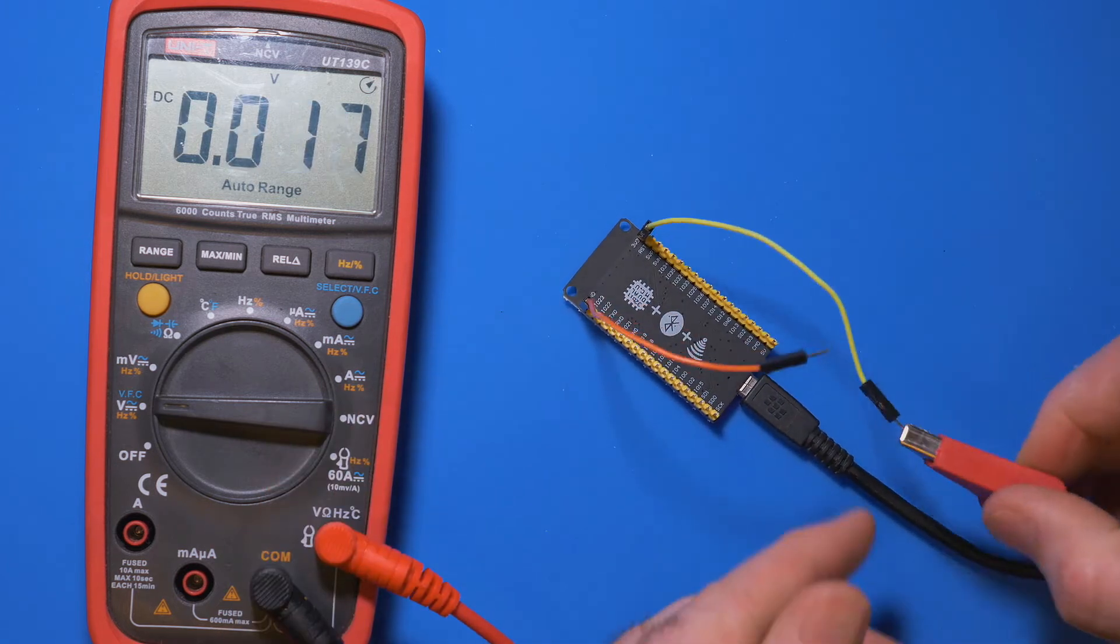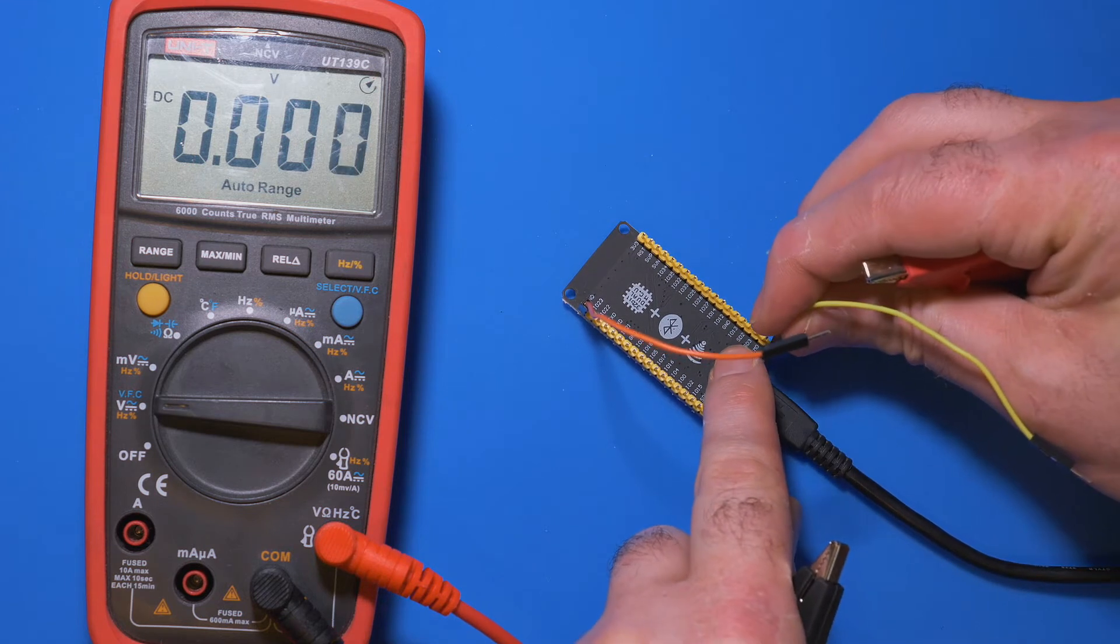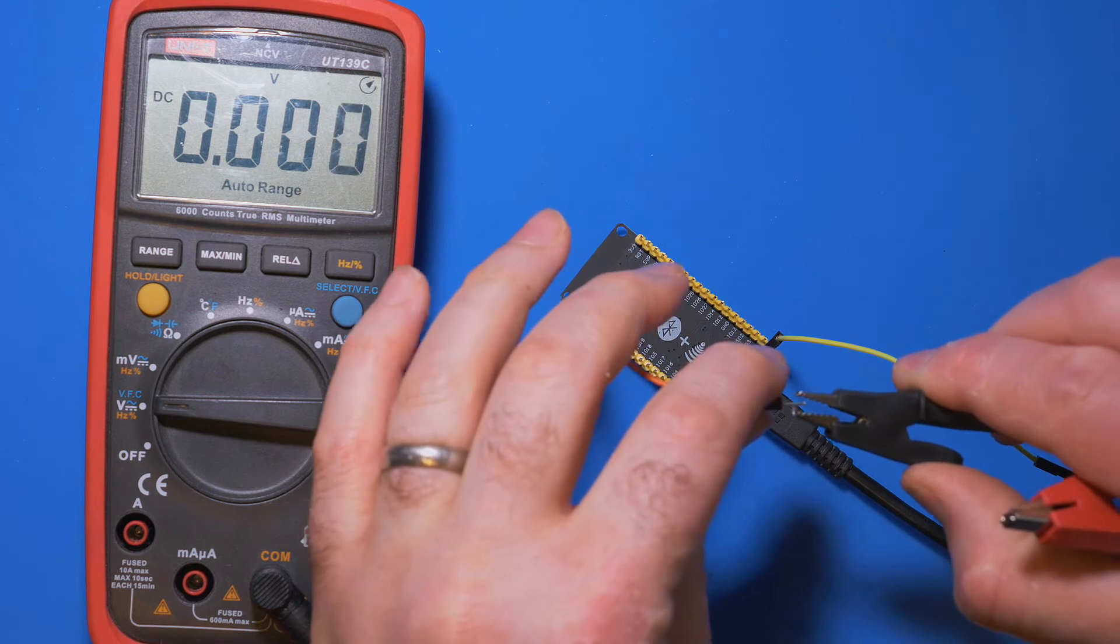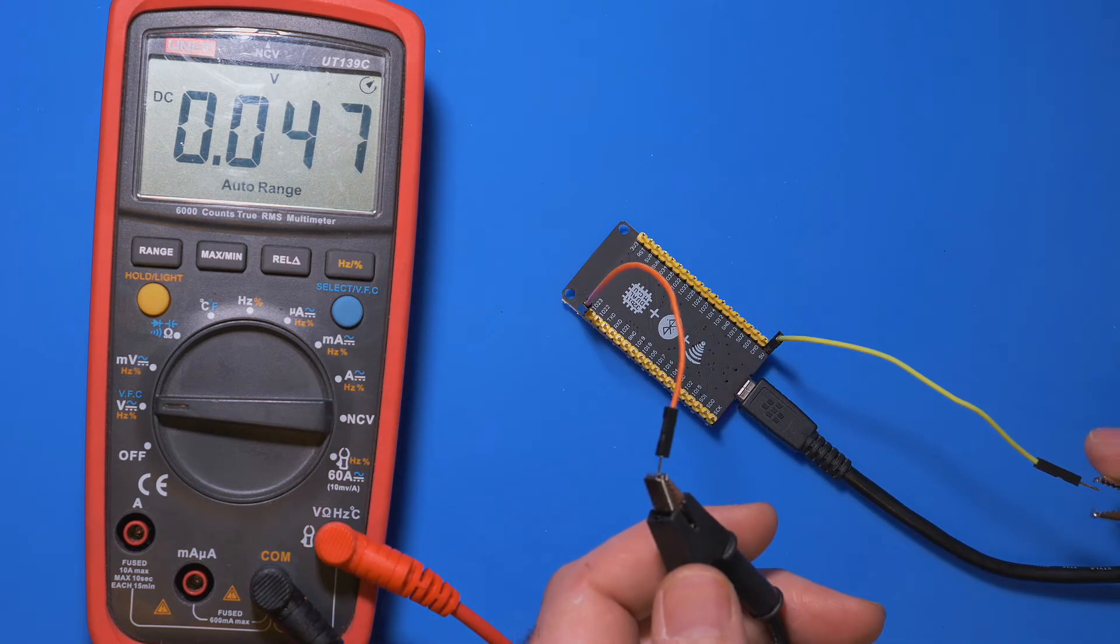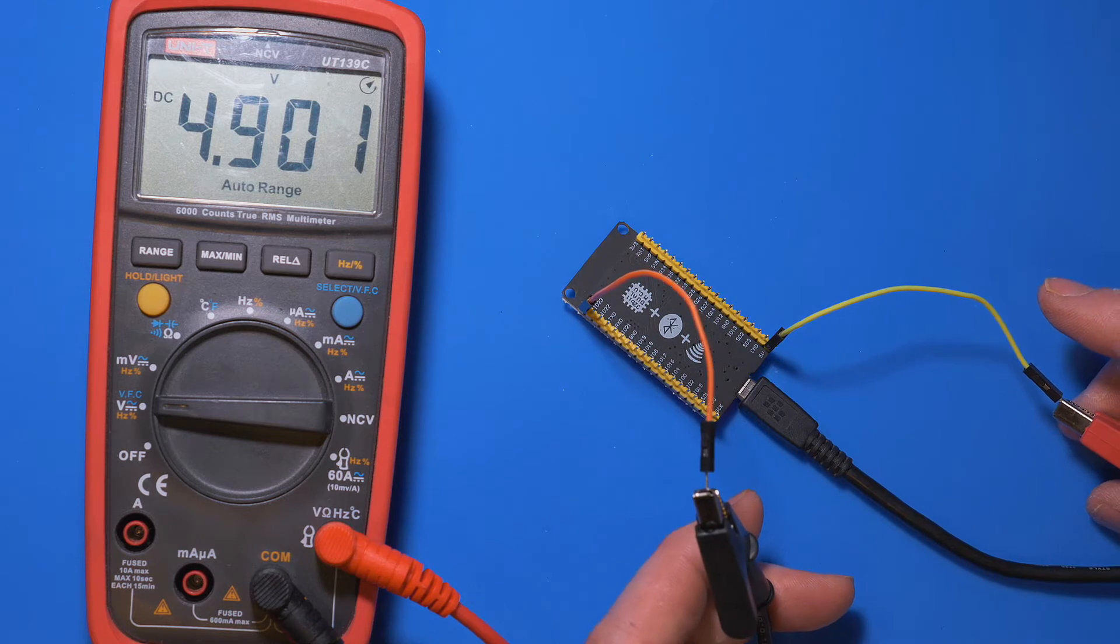So let's do this again with 5 volts and we can see 5 volts is down the bottom here. And again, let's connect up ground and 5 volts, and we can see there 4.9 volts. That's perfectly good enough as well.